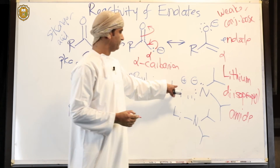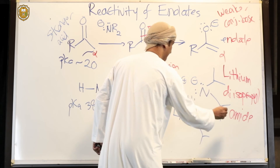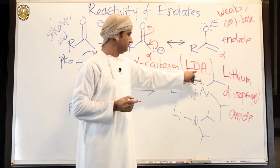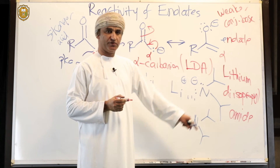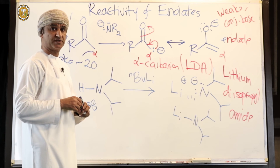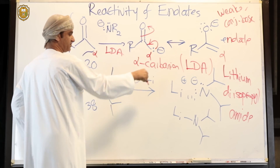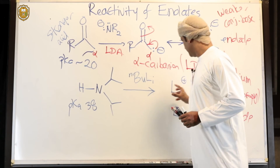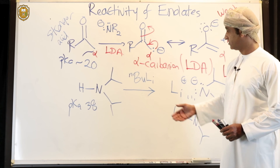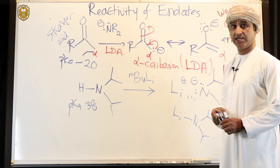This compound is called lithium diisopropyl amide, abbreviated as LDA: L for lithium, D for diisopropyl, A for amide. LDA is the typical base used for the deprotonation of carbonyl compounds such as ketones. It is formed when diisopropylamine is deprotonated with a strong organolithium such as n-butyllithium. LDA is very commonly used to deprotonate ketones at the alpha position to make the corresponding enolates.